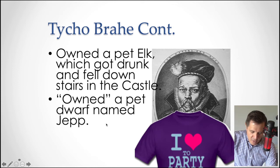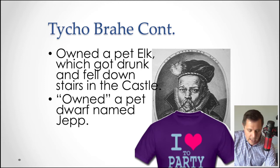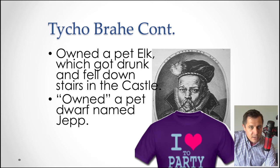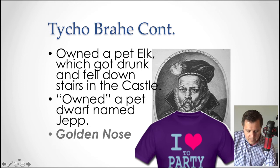He loved to party. Here are a few things to know about Tycho: he owned a pet elk which got drunk and fell down the stairs, he owned a dwarf named Jepp who was like his court jester, so he was a very eccentric man. He also had a golden nose because he lost his nose in a duel.